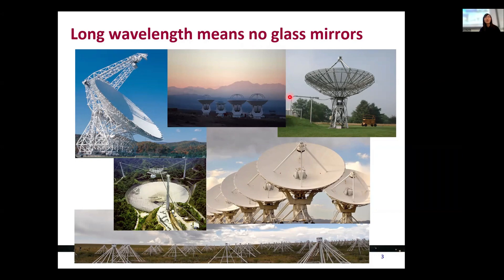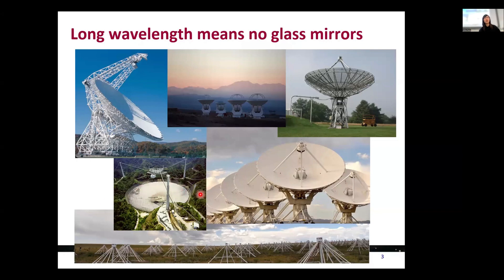This is Green Bank Telescope, ELMA, and another telescope in the Green Bank Observatory. This is VLA, and this is a receiver which no longer exists — they already collapsed. But this was once the largest radio telescope in the world with 300 meters in diameter. Now I think there is even a larger telescope — the FAST is 500 meters.